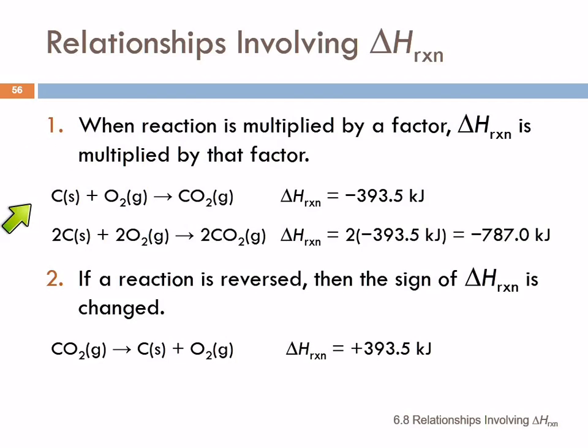So if we take a reaction, say this, carbon plus oxygen to form carbon dioxide, this is one way of making carbon dioxide, by burning carbon. We know we can measure the enthalpy change and it's minus 393.5 kilojoules.